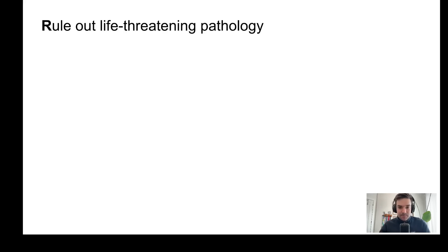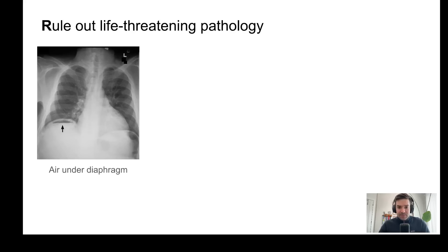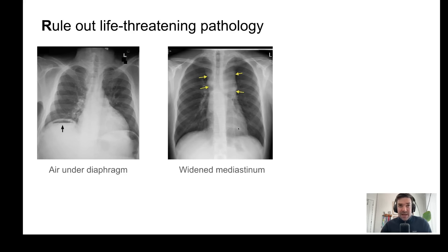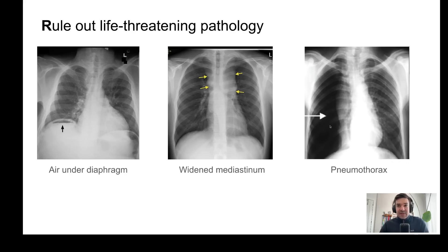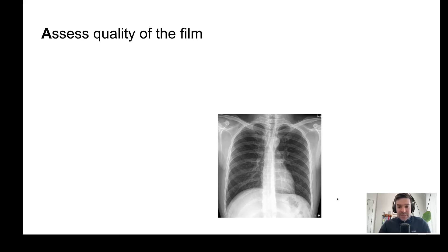Ruling out three important life-threatening pathologies: the arrow sign shows air under the diaphragm, which suggests somebody has potentially perforated their bowel. A markedly widened mediastinum can suggest an aortic dissection. And here, a very large pneumothorax — usually pneumothoraces are not this obvious, but you can see it's all black and there are no lung markings whatsoever.